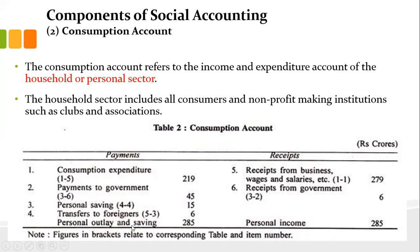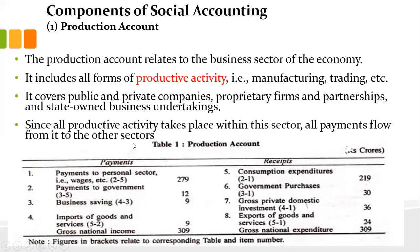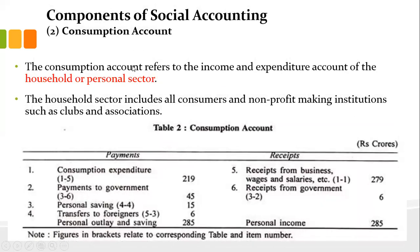On the receipts side of the consumption account, households receive wages and salaries from the manufacturing sector, and receipts from government such as subsidies or other facilities. You can see how the wage payments from the production account become receipts in the consumption account — illustrating how different sectors are interrelated. Personal outlay and saving equals personal income.